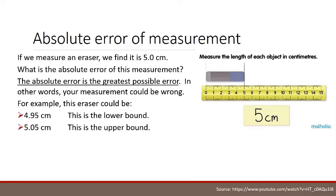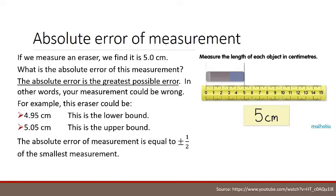Even whatever the length is, it would still be called 5.0 centimeters using this ruler. So the absolute error of measurement is equal to plus or minus half of the smallest measurement.